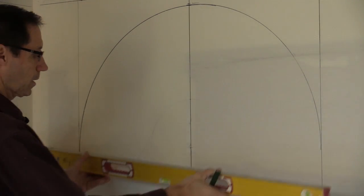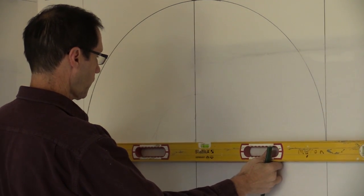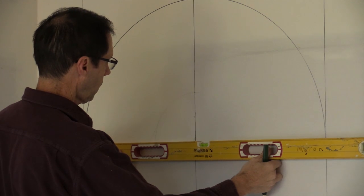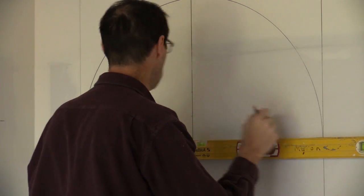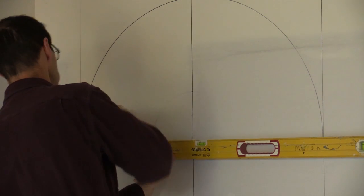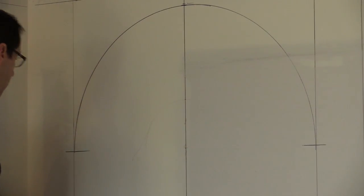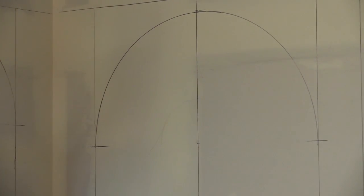So there's our spring line. That is 18 inches down from the top of the arch.